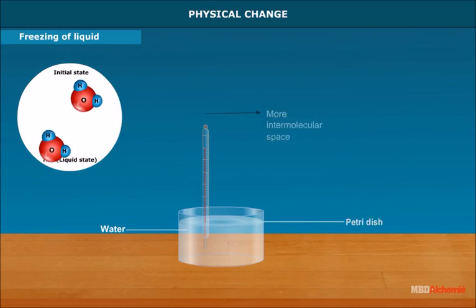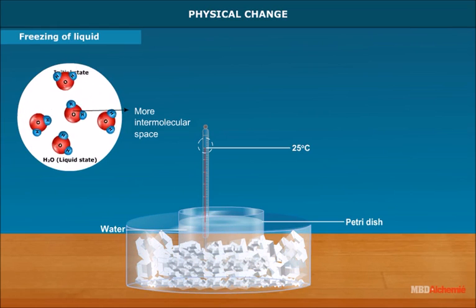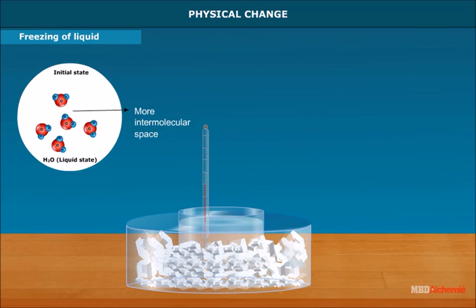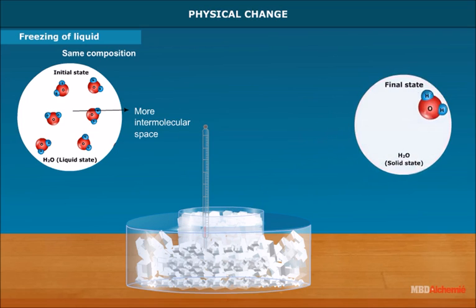Take some water in a petri dish. Note its temperature. Put it in the fridge for a few hours. Now the water changes into solid ice. Note the change in its temperature. Water molecules take definite shape. Thus we can say that liquid changes into solid.